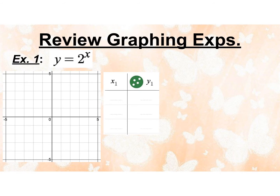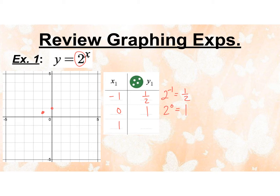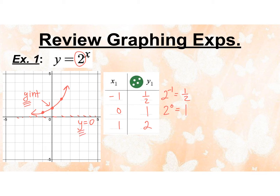Here we have y equals 2 to the x. My base is 2, so I know it's going to be a growth. I'm going to do x values of negative 1, 0, and 1. 2 to the negative 1 is the reciprocal, so we're at 1 half — that's the point negative 1, one half. 2 to the 0 is 1, so we have the point 0, 1 — that's our y-intercept. And 2 to the 1 is 2, so we're growing exponentially. We also have an asymptote at y equals 0, because the function can never be 0 or negative. So exponentials have a y-intercept and a y equals asymptote.